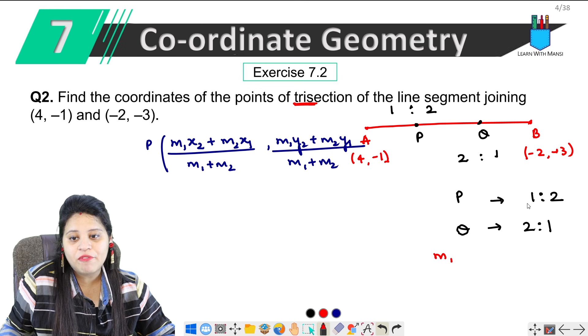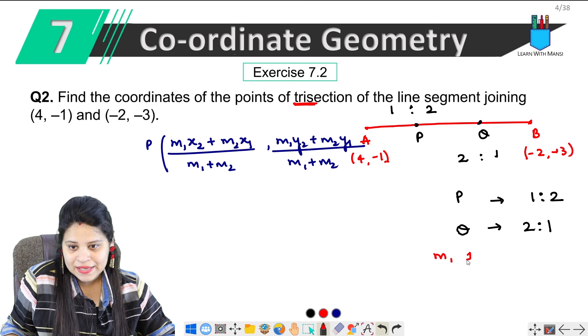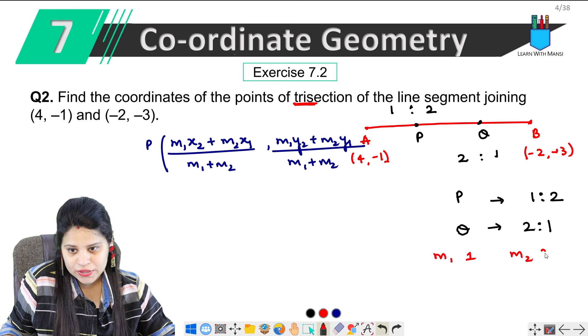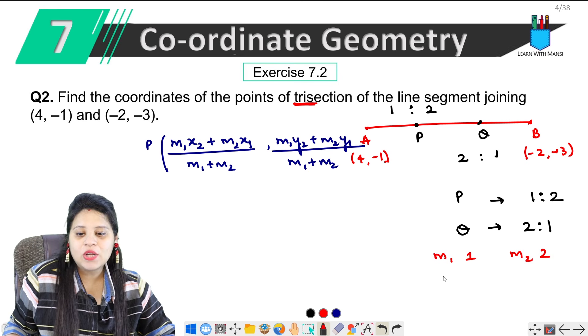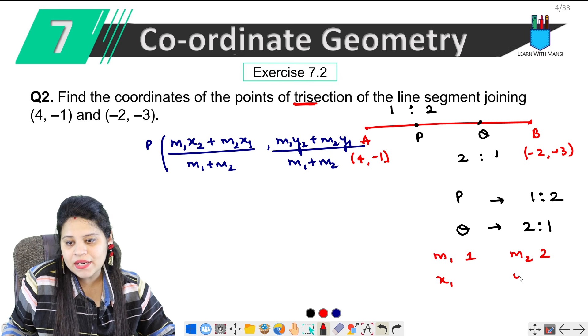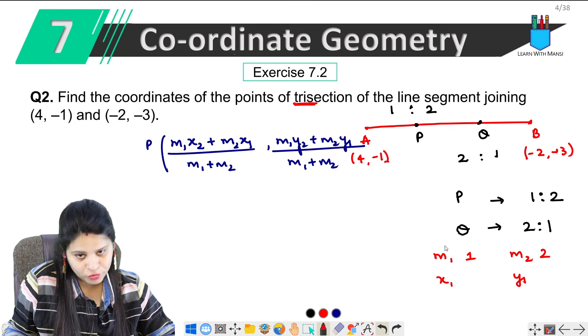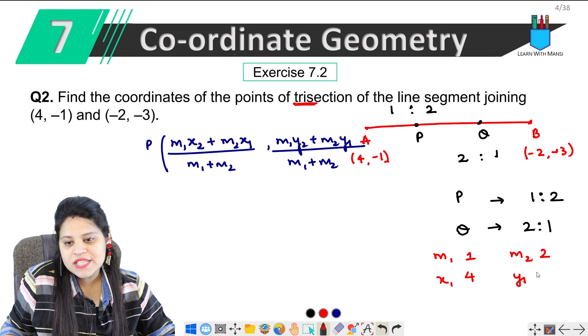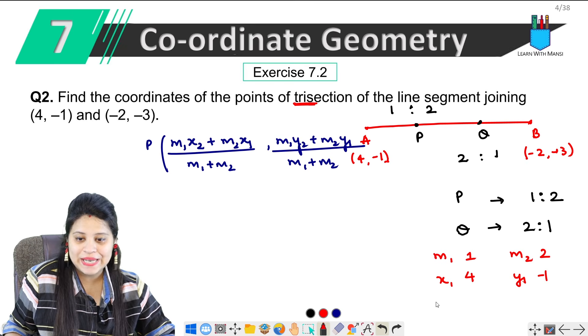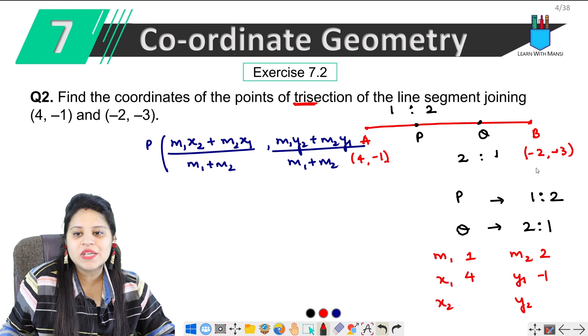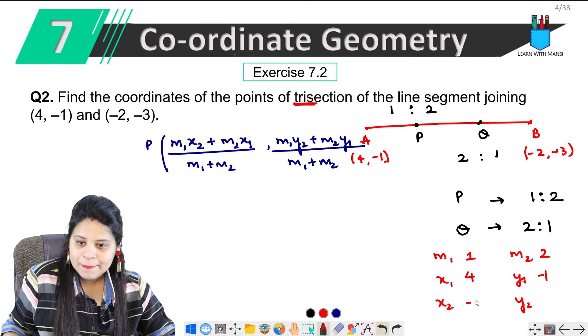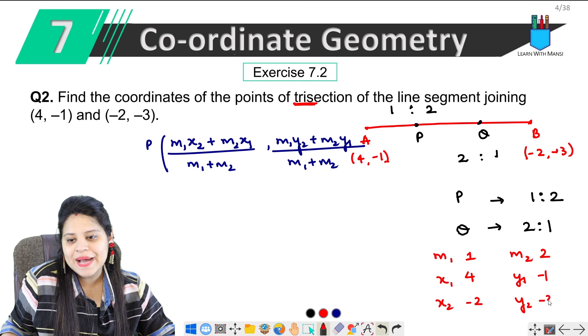So we will write out the values. Values kya hogi? So much values. First case: m1 value is 1 and m2 value is 2. Next, move on to x1 and y1. What coordinates do we have? A, which is 4, -1. Then x2, y2, which coordinates will we have? B ke, that means -2, -3.